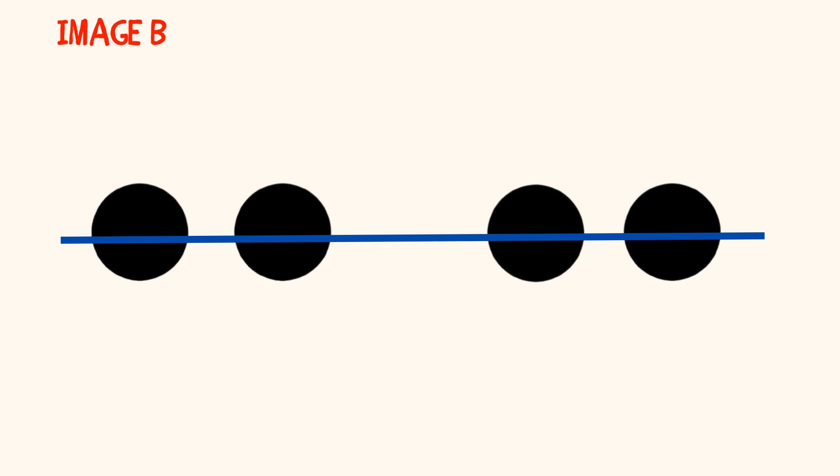Another student may say that they saw four dots in a horizontal line. This signal will not only serve as a quick assessment, but it will ensure that your students are engaged and listening to other strategies.